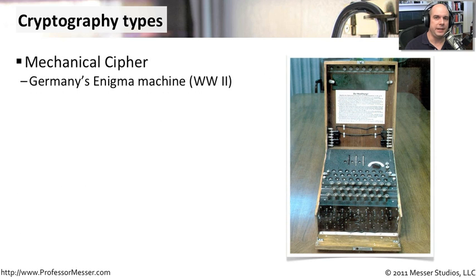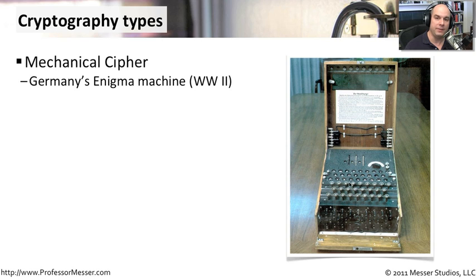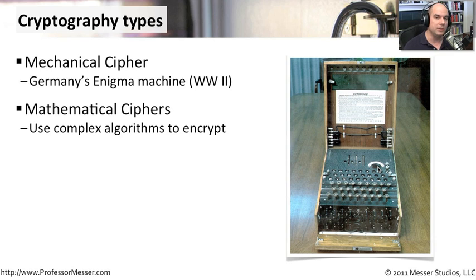In modern times, ROT13 or a transposition cipher isn't really going to keep things very safe. We started to see mechanical ciphers appear around the World War II time frame. Germany used the Enigma machine, which took a message and encrypted it using machinery — you needed the machine on both ends to encrypt and decrypt messages. Cracking that encryption was an extremely important part of what happened during World War II. There are also mathematical ciphers, which we see most often in modern times — a very complex cipher is very difficult to decrypt.